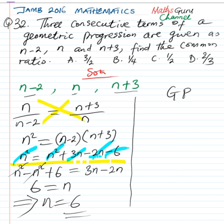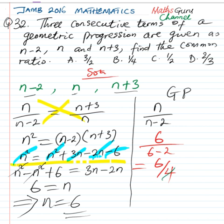Now we have n equal to 6, and the question requires us to find the common ratio. The common ratio is simply n over n-2, or you can take n+3 over n. Any of these is the common ratio. If n is equal to 6, then we have 6 over 6 minus 2, which is 4. So we have 6 over 4. Let's simplify: 2 in 4 is 2, 2 in 6 is 3, so we're going to be left with 3 over 2.